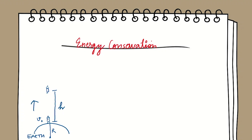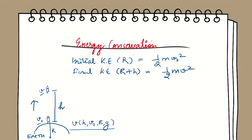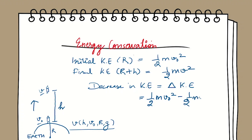We have a rocket initially fired vertically with speed v₀, and it reaches height h with velocity v. We need to find the expression for v in terms of h, v₀, r, and g. Using the energy conservation principle, the initial kinetic energy at radius r is (1/2)mv₀², and the final kinetic energy at distance r + h is (1/2)mv². So the decrease in kinetic energy is (1/2)m(v₀² − v²).